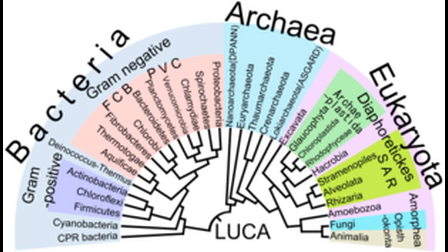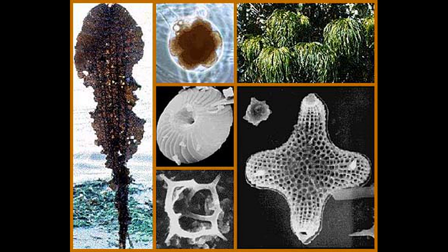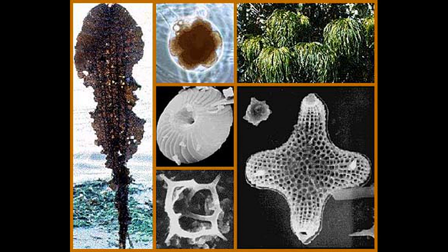This is one which could occupy an entire video unto itself. For the purposes of this video, all you need to keep in mind is that plants are situated within the clade Diaphoretics, and within that they are in the clade Archaeplastida, which is sister to the clade of protists called Chromista. An early Archaeplastid achieved endosymbiosis with a cyanobacterium, which eventually became the chloroplast.